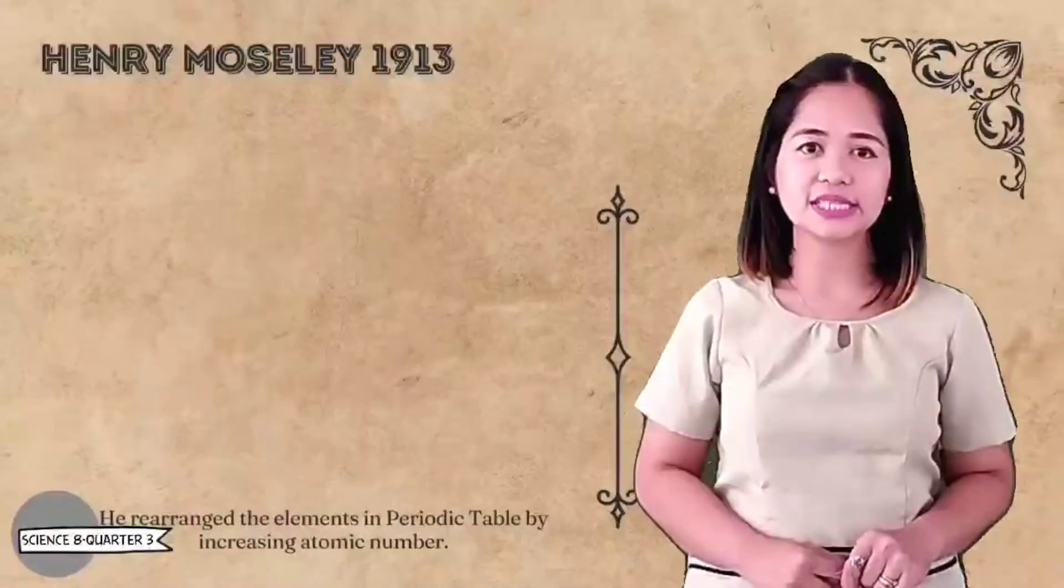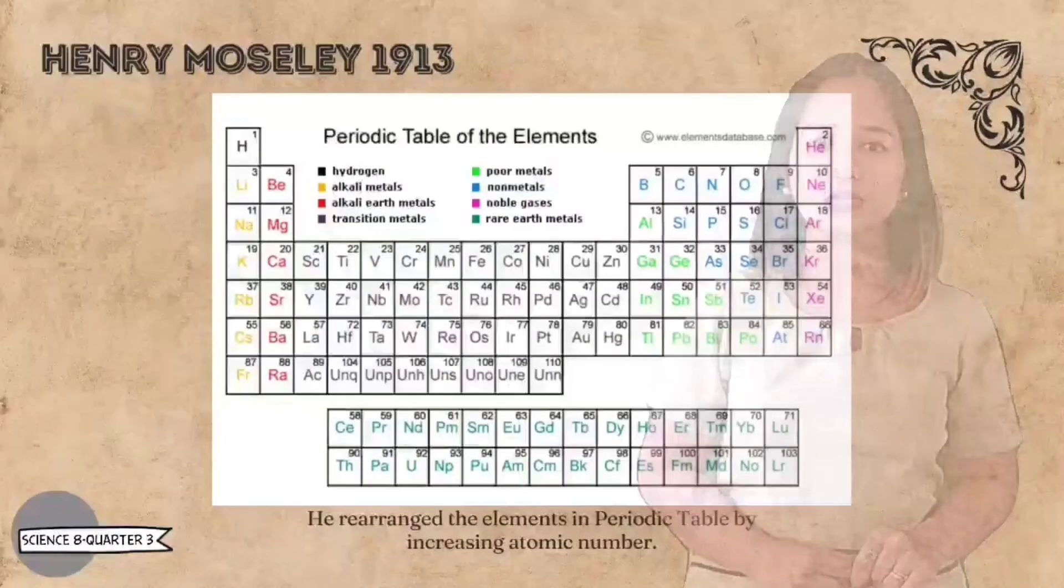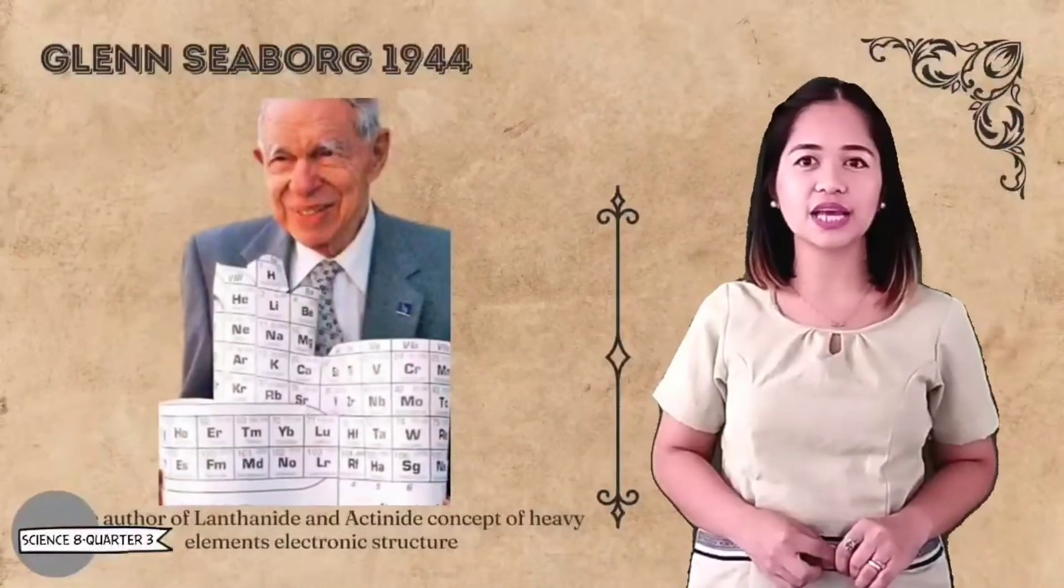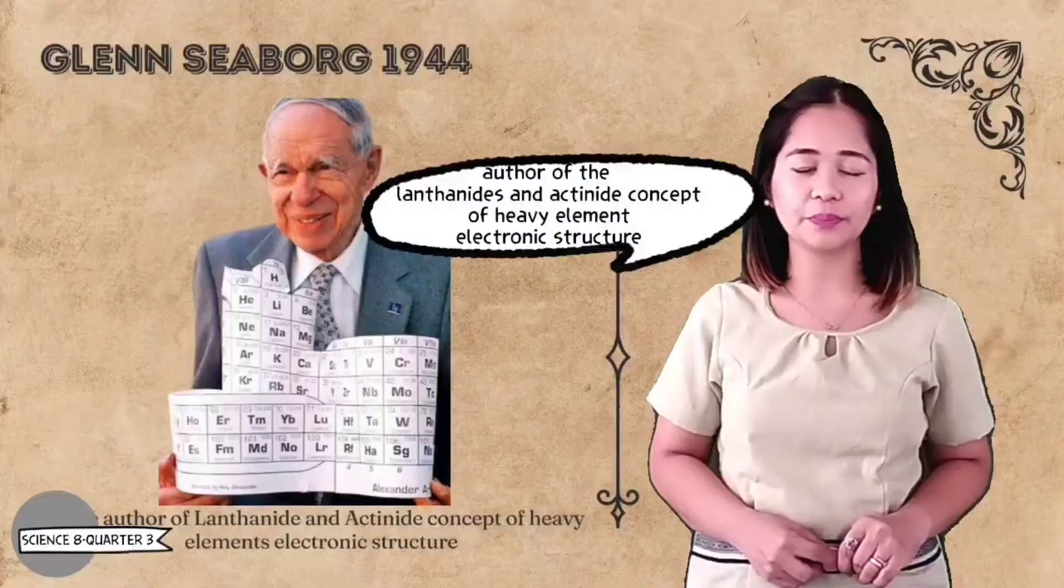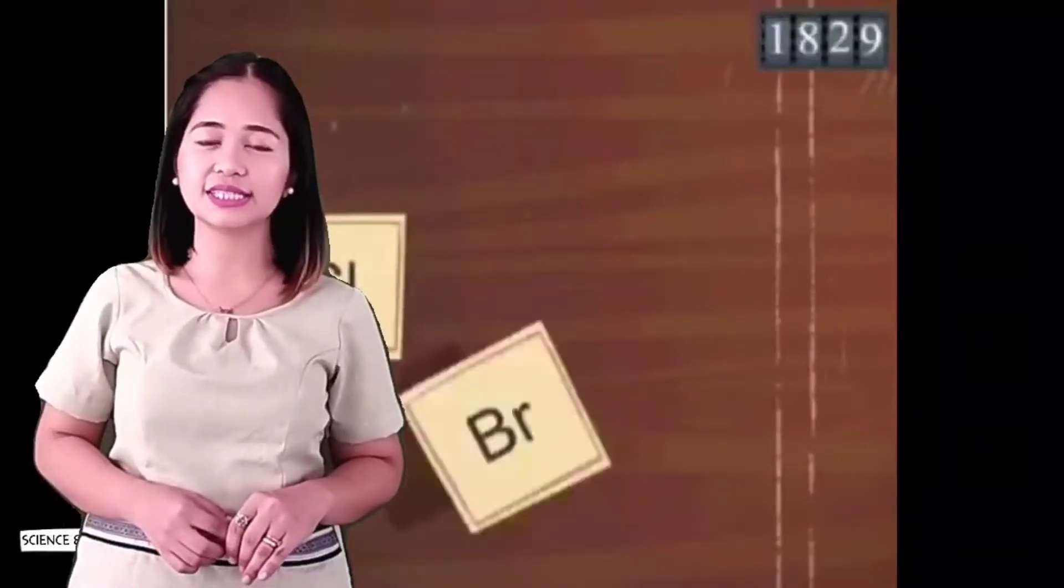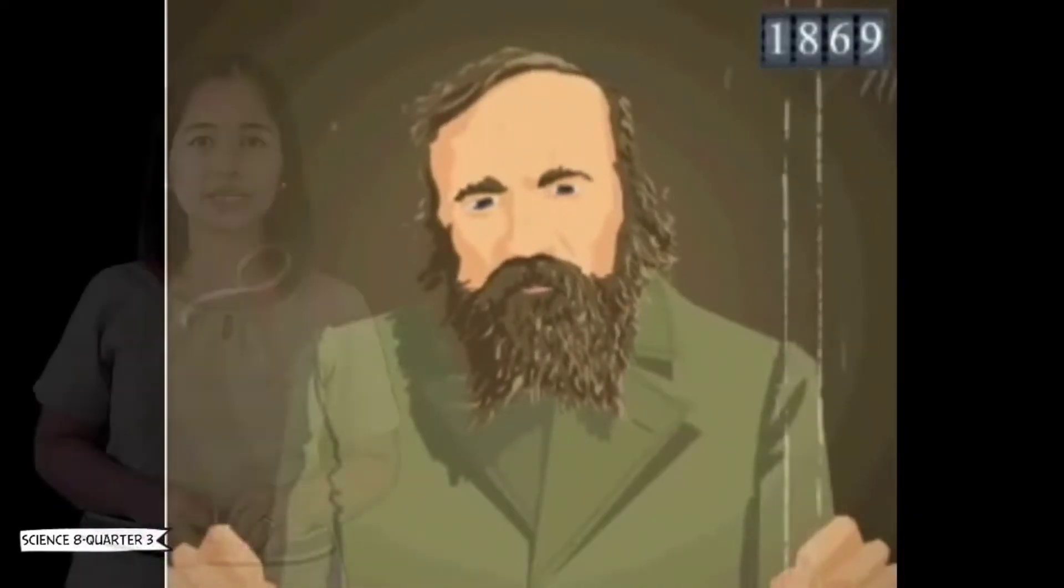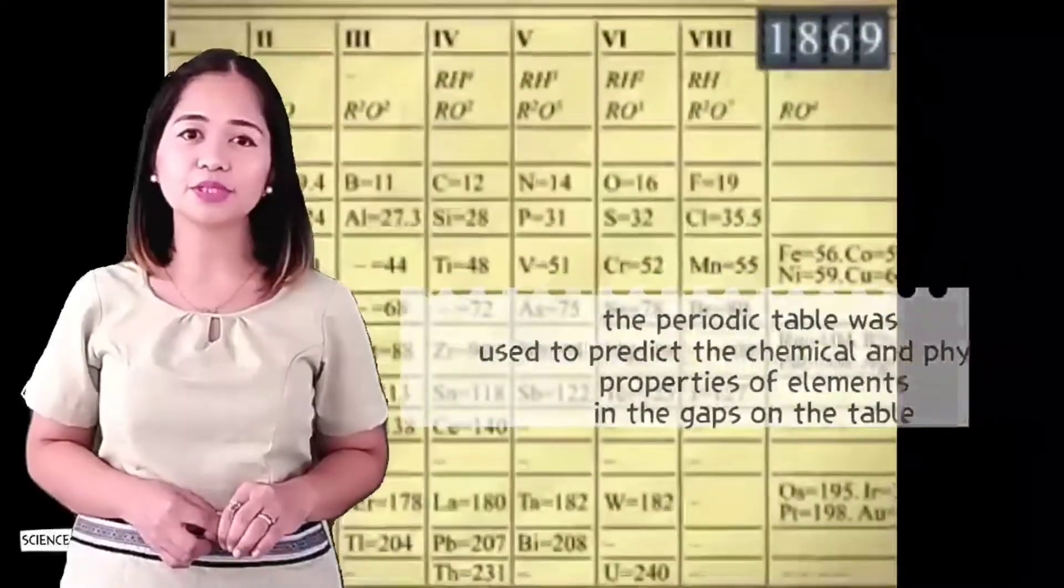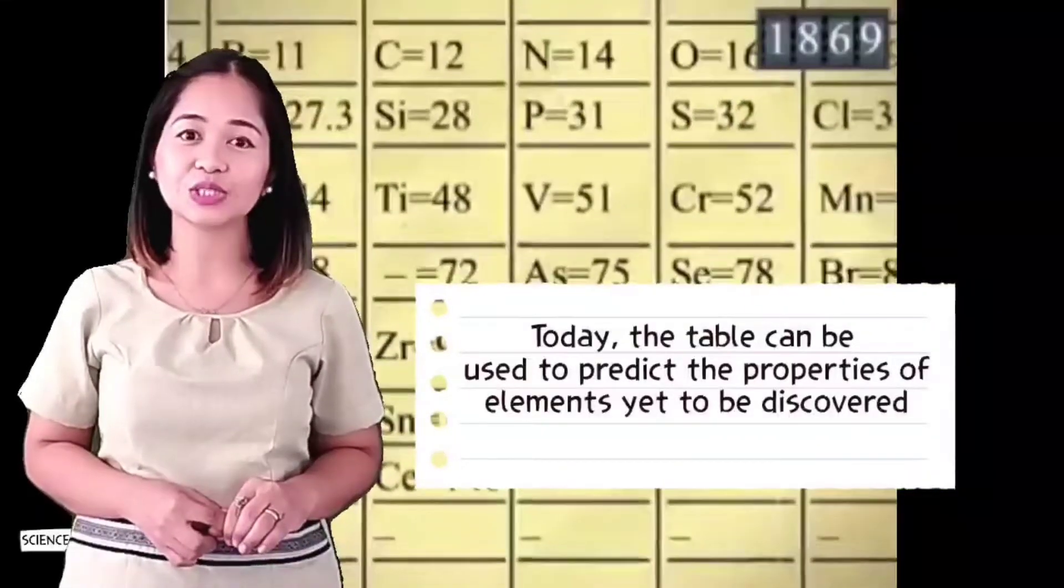In 1913, English physicist Henry Moseley rearranged the elements in the periodic table based on atomic numbers. Glenn Seaborg is best known for discovering plutonium in February 1941. He is also author of lanthanides and actinides concept of heavy element electronic structure. The periodic table has gone through many changes since Dmitri Mendeleev drew up its original design in 1869. The periodic table was used to predict the chemical and physical properties of elements in the gaps on the table. Today, the table can be used to predict the properties of elements yet to be discovered.